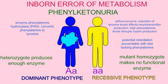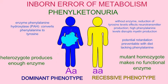Phenylketonuria is an example of an inborn error of metabolism. This is caused by the lack of the ability to produce an essential enzyme. The enzyme phenylalanine hydroxylase, or PAH,